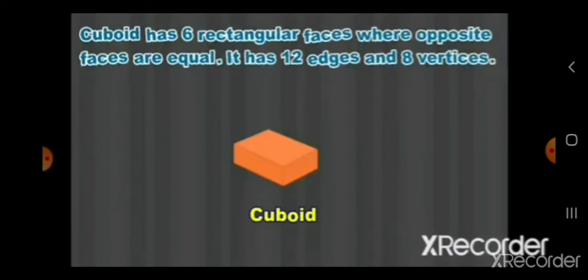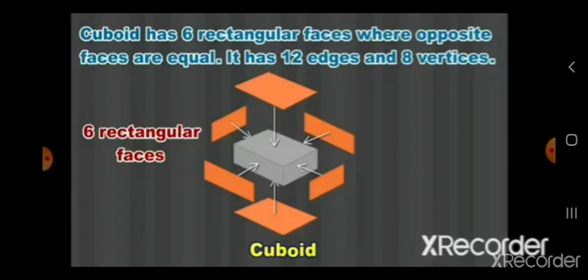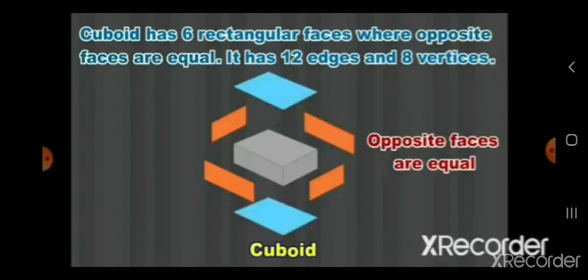So next shape is a cuboid. A cuboid has 6 rectangular faces. 1, 2, 3, 4, 5 and 6. Now rectangular faces means it is a rectangle in shape. And as you can see the opposite faces are equal. Can you see in the picture? See the opposite ones are equal in size.